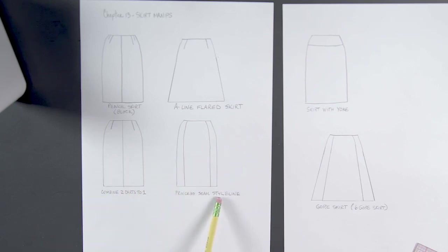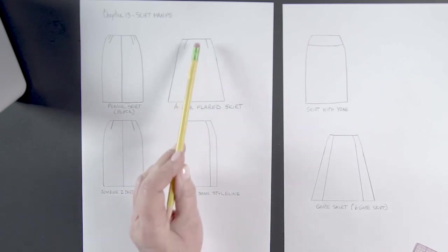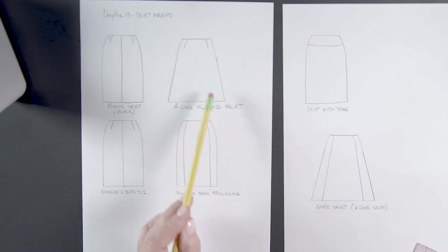That's a princess seam style line. Here we have an A-line flared skirt. You can see how this hemline is bigger circumference than this. And this is typically like the letter A or a triangle shape.